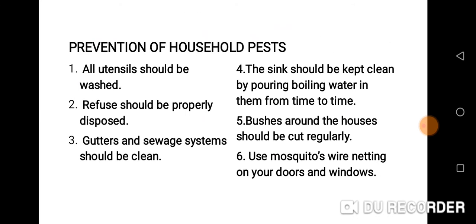How can we prevent household pests? All utensils should be washed — whenever you finish eating your food, never leave your plate in the sink; always wash it immediately, even your pot. Refuse should be properly disposed of in our dustbin, and always ensure we cover it or wrap it in a nylon bag. Gutters and sewage systems should be kept clean. The sink should be kept clean by pouring boiling water in them from time to time.